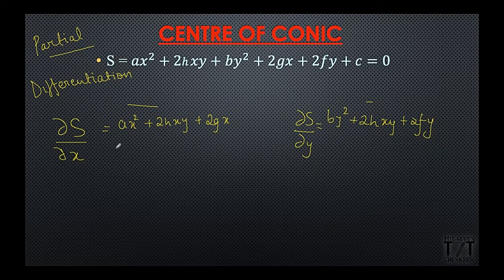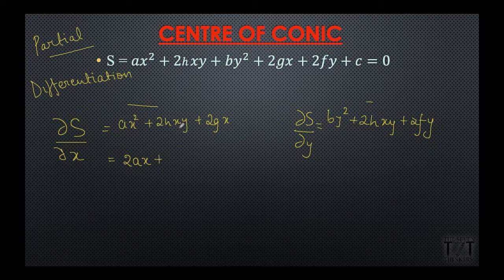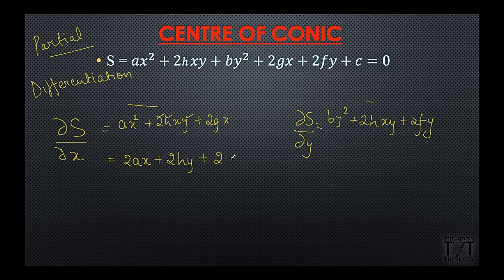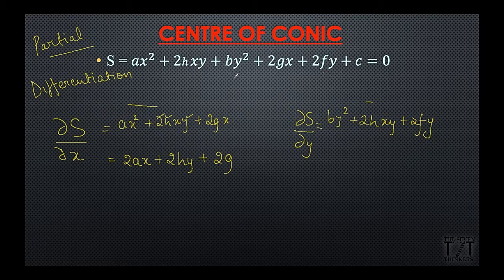If we partially differentiate S with respect to x: the differentiation of x² is 2x, so this gives 2ax. The differentiation of x is 1, and the terms y, h, and 2 are treated as constant, giving +2hy. For the 2gx term, differentiation of x is 1, giving +2g. The remaining terms with no x in them differentiate to 0.